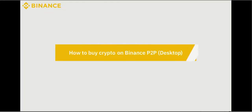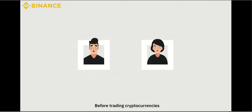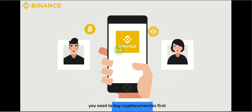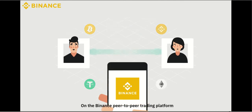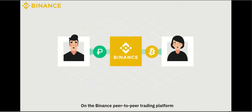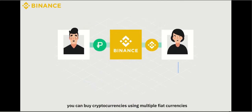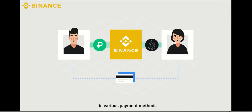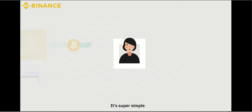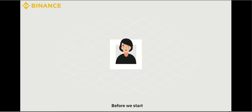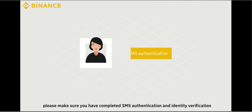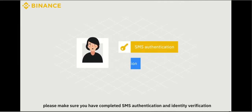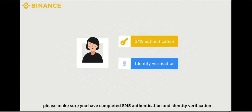How to buy cryptocurrency on Binance P2P. Before trading cryptocurrencies, you need to buy cryptocurrencies first. On the Binance peer-to-peer trading platform, you can buy cryptocurrencies using multiple fiat currencies in various payment methods. It's super simple. Before we start, please make sure you have completed SMS authentication and identity verification.